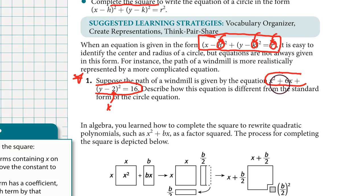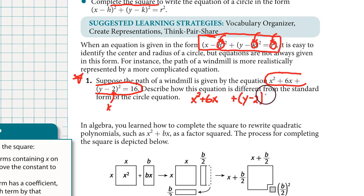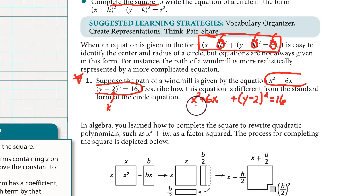The x part is what we need to use completing the square on. Let's rewrite the equation so we can work with it: x-squared plus 6x, then leave some space, then plus the y part, and equals 16. The letter y is all set — we have the parentheses and the minus. It's the letter x that we want to convert so that it also has the parentheses format.